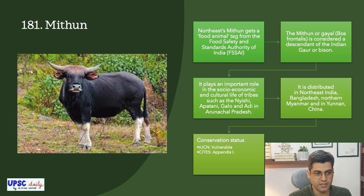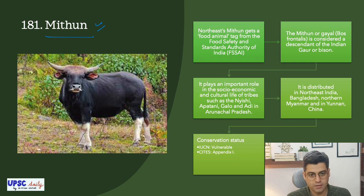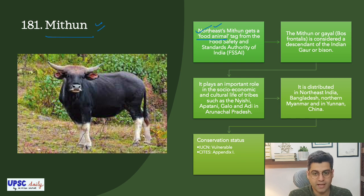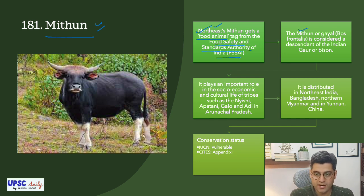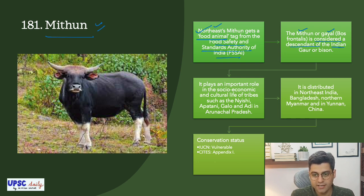The first topic for today is Mithun. The Mithun animal is found mostly in northeast India. It has got a food animal tag from the Food Safety and Standards Authority of India, FSSAI. The Mithun or Gyal, scientific name Bos frontalis, is considered a descendant of the Indian gaur or bison.